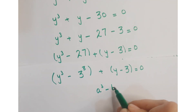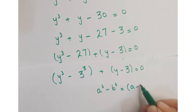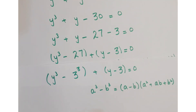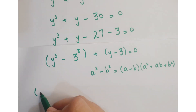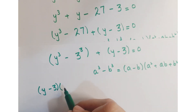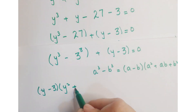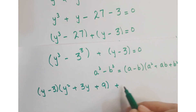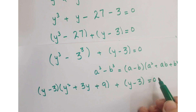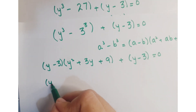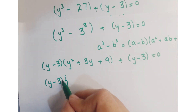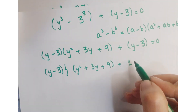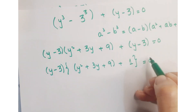Here you can apply the algebraic identity: a cubed minus b cubed equals a minus b into a squared plus ab plus b squared. So you can write it as y minus 3 into y squared plus 3y plus 9, plus y minus 3, equals 0. Now taking out y minus 3 as common, you are left with y squared plus 3y plus 9 plus 1 equals 0.